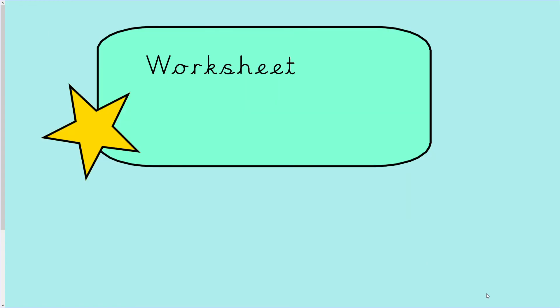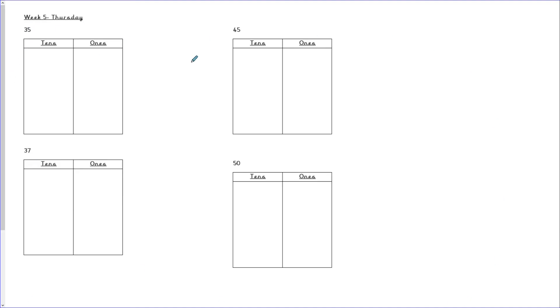In your home learning pack you are going to find the worksheet for week five, Thursday. I would like you to do the same — you've got the number at the top, label the tens and ones, and draw the number. Once you've finished, please upload your work to Class Dojo. Thank you.